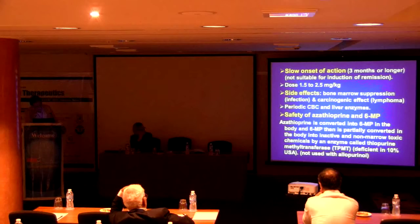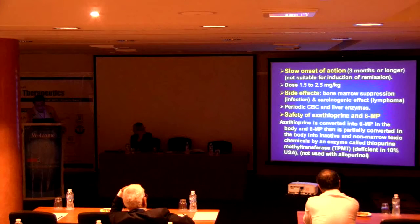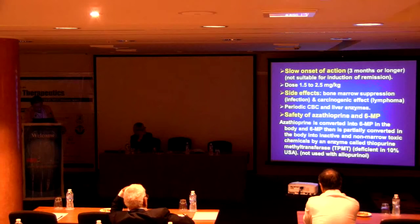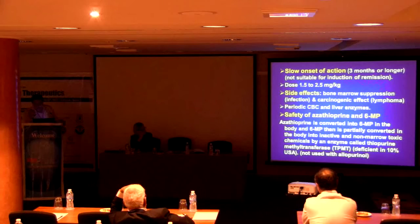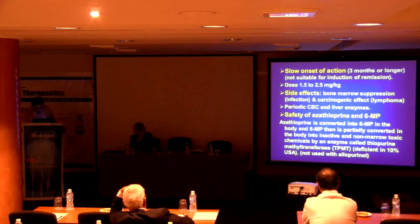The usual dose of azathioprine is 1.5 to 2.5 mg per kg per day. Side effects include bone marrow suppression, increased risk of infection, and a carcinogenic effect with increased incidence of lymphoma. Azathioprine is converted to 6-mercaptopurine in the body, which is partially converted to inactive non-myelotoxic metabolites by the enzyme thiopurine methyltransferase (TPMT). This enzyme is deficient in about 10% of cases, so screening for TPMT before starting azathioprine is recommended. If deficient, do not give it. It must also not be used with allopurinol, which is used for gout.